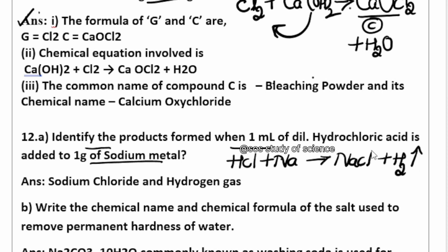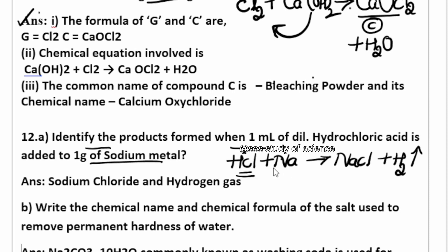For these kinds of questions in the examination, always write it in the form of a chemical equation for a clear answer. Hydrochloric acid reacts with sodium: sodium displaces hydrogen, combining with chlorine to form sodium chloride, and hydrogen gas is liberated. So the products are sodium chloride and hydrogen gas — very simple.